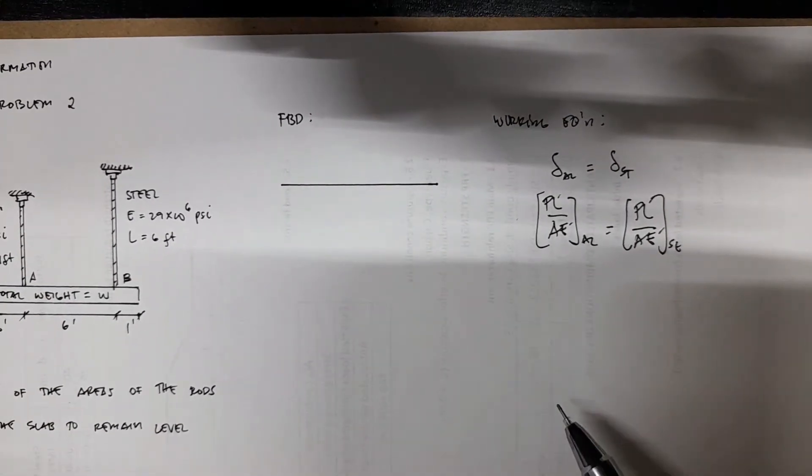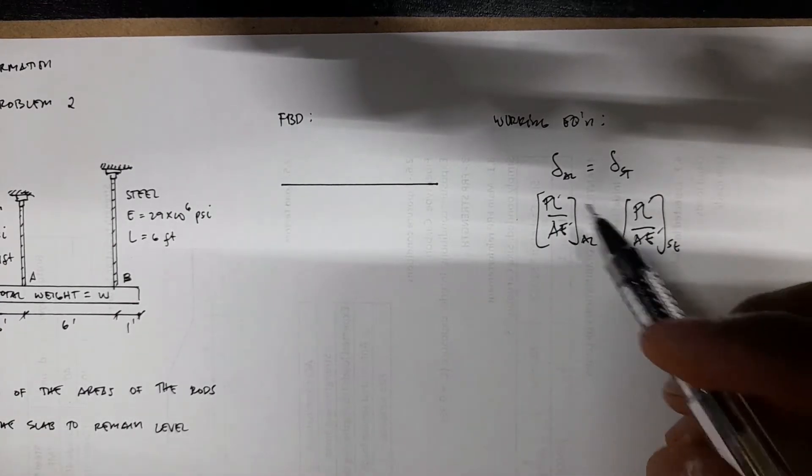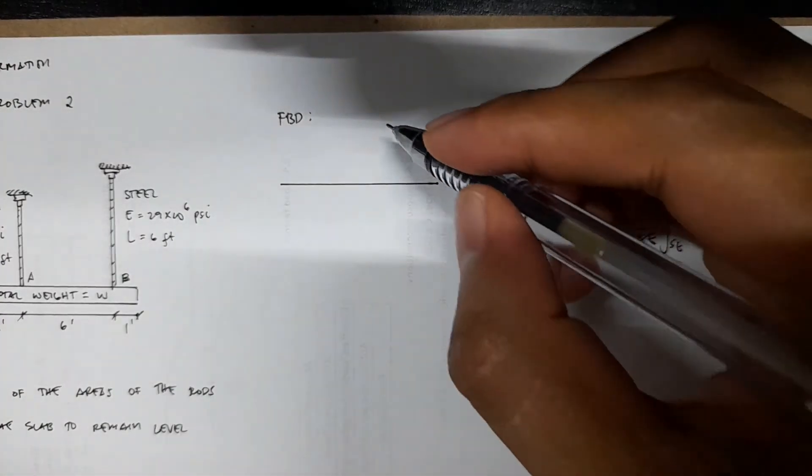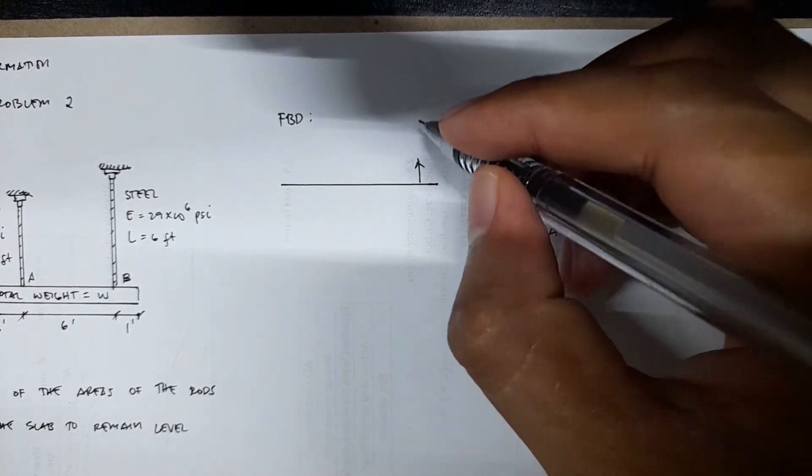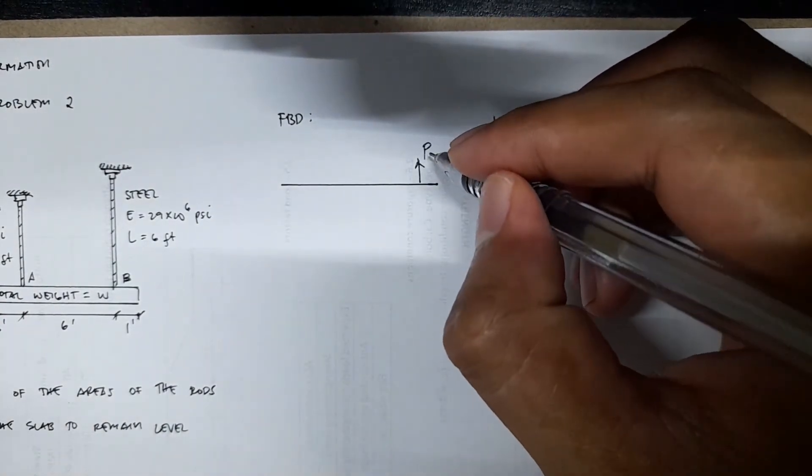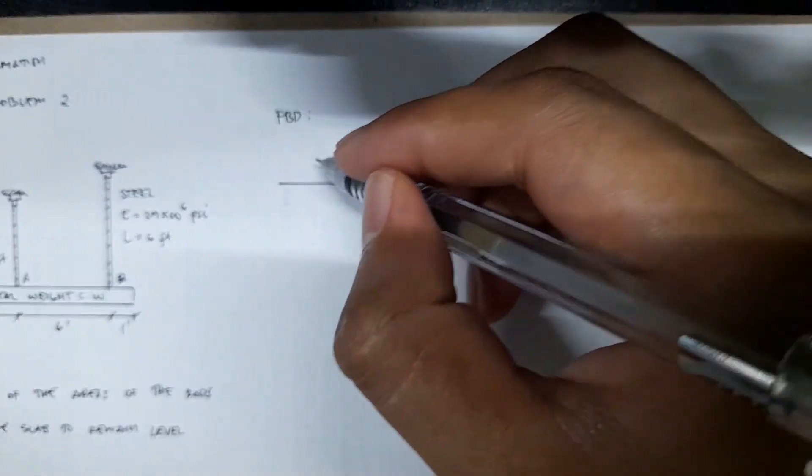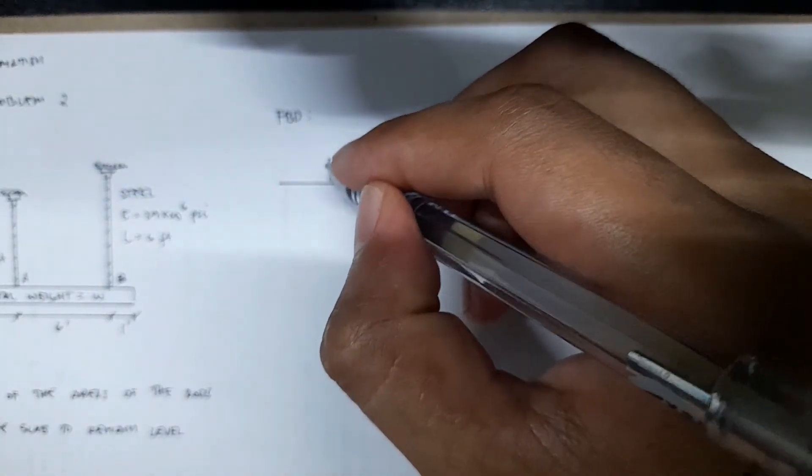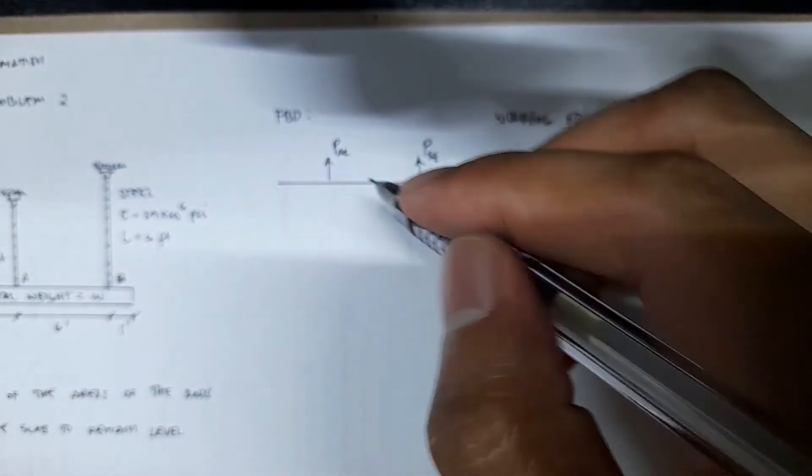First, you have to isolate the slab and represent it in a free body diagram. We have here the force of aluminum, which is here.